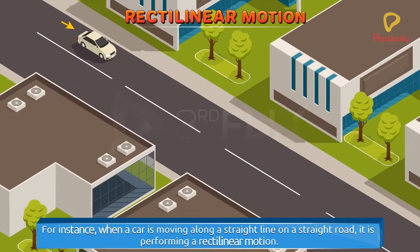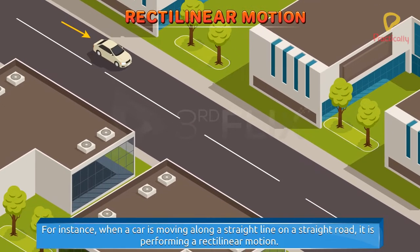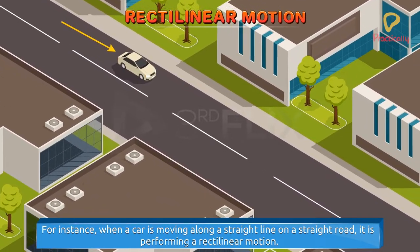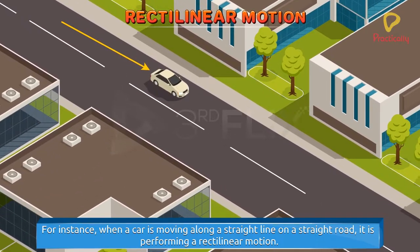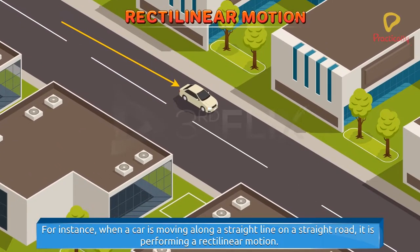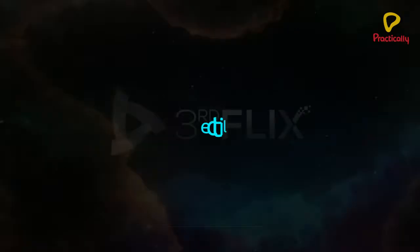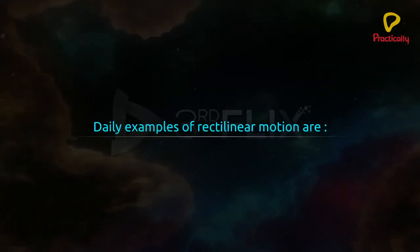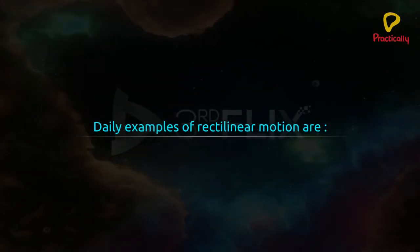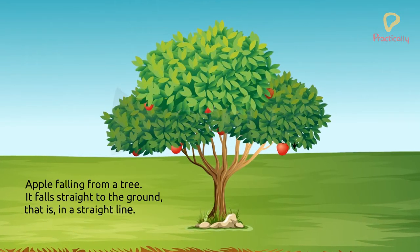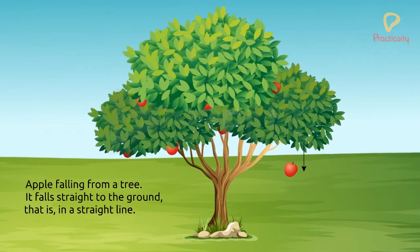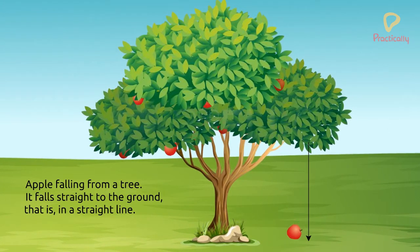For instance, when a car is moving along a straight line on a straight road, it is performing a rectilinear motion. Some of the daily examples of rectilinear motion are: Apple falling from a tree. It falls straight to the ground, that is, in a straight line.